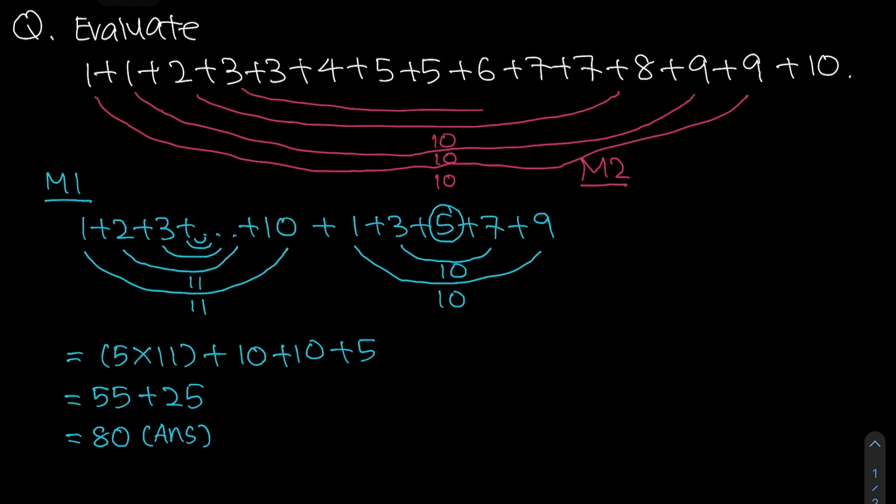Okay, 3 can go with 7 to give you 10. Okay, similarly, my other 3 can go with my other 7 as well to give you 10. And you'll notice that it can go all the way until 5 and 5. So you'll realize that from 1 to 9, you will have a total of 7 pairs of 10.